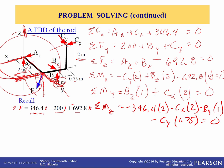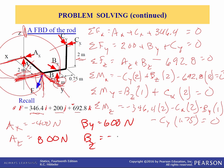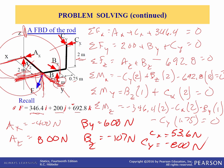Solving algebraically for the unknowns: A sub X equals minus 400 newtons, A sub Z equals 800 newtons, B sub Y equals 600 newtons, B sub Z equals minus 107 newtons, C sub X equals 53.6 newtons, and C sub Y equals minus 800 newtons.